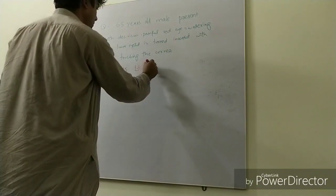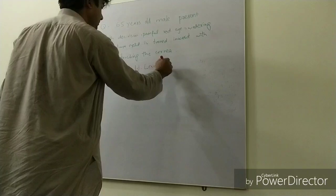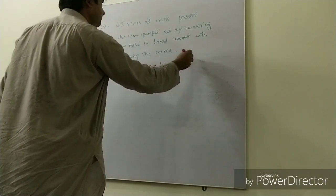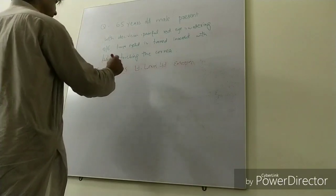They ask you the first question of diagnosis. The definitive diagnosis is lower lid entropion. Then they ask you about the differentials.